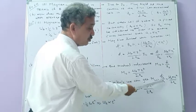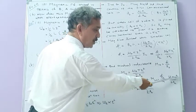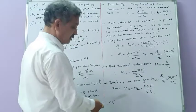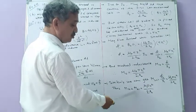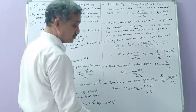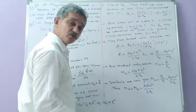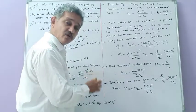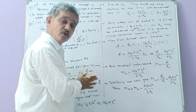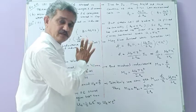That will be M21, and the answer is mu0 pi R1 squared upon 2R2. Thus, M12 equals M21 equals mu0 pi R1 squared upon 2R2 is the mutual inductance of the system of two concentric coplanar coils.